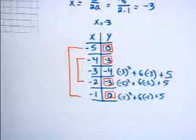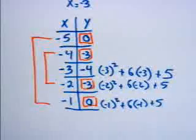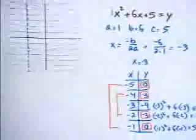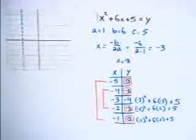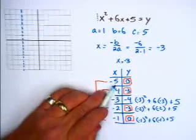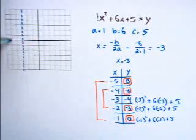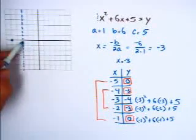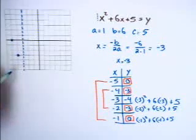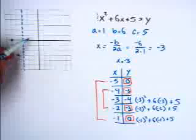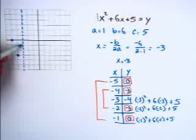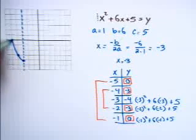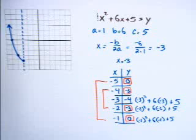Let me zoom in on this so you can see what I did. Now it's time to graph these things. Plotting the points: negative 5 gives y equals 0, negative 4 gives y equals negative 3, negative 3 gives y equals negative 4, negative 2 gives y equals negative 3, and negative 1 gives y equals 0. That's enough for me to sketch that first graph.